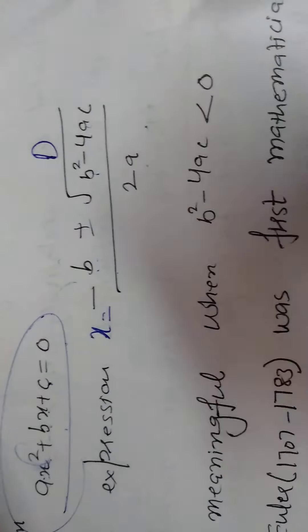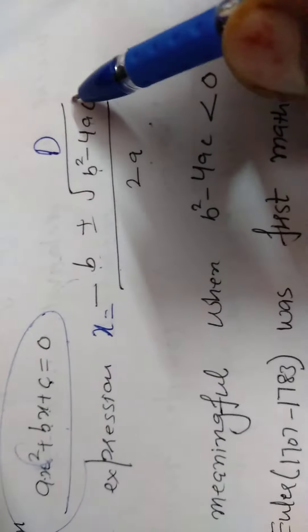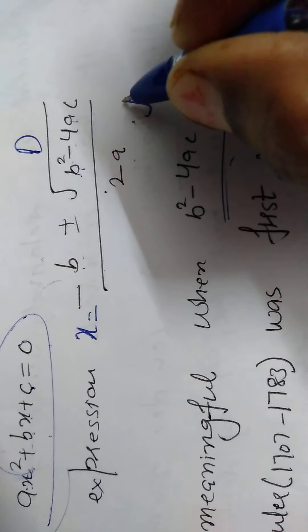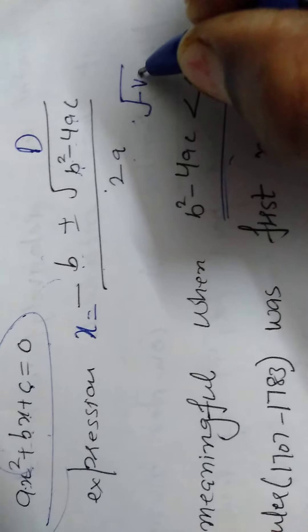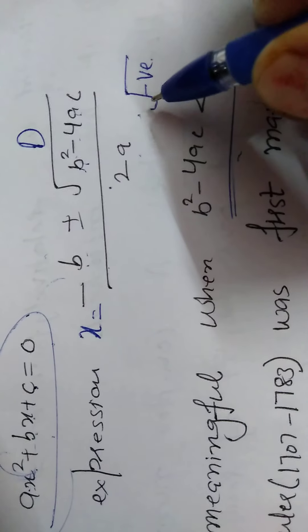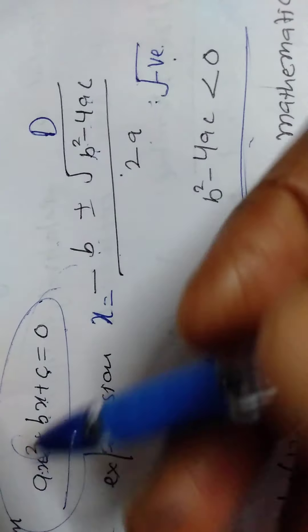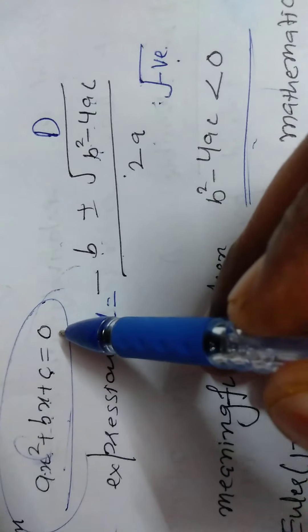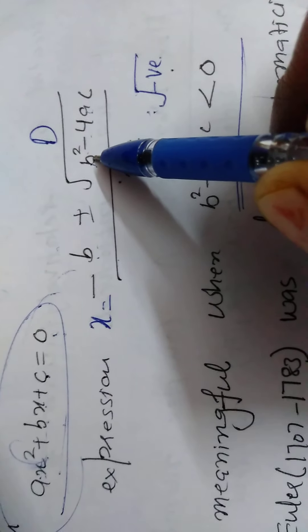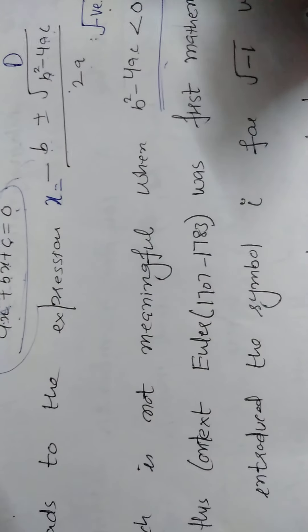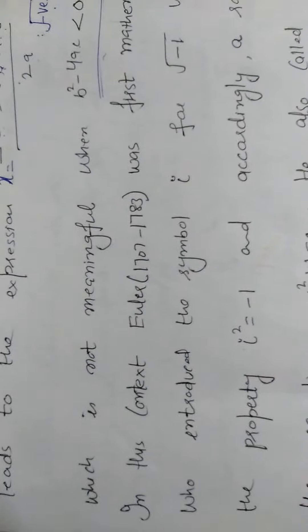Why did we think about complex numbers? Because when b squared minus 4ac is negative, what will be the solution of this equation? Before the origin of complex numbers, we did not know what the square root of a negative number would be. There may come an equation for which b squared minus 4ac is negative, so complex numbers came into existence to handle these equations.